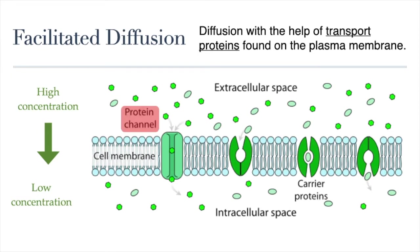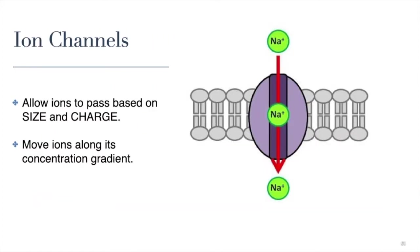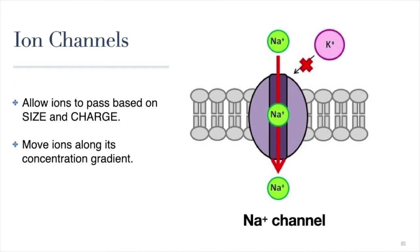Channel proteins form pores or tunnels crossing the membrane, and they allow the target molecules or ions that pass through them by diffusion to do so without interaction. Ion channels allow ions to move through the plasma membrane along the concentration gradient. They tend to be specific to the ion they allow through, based on both the size and the charge of the ion. For example, this here is a sodium channel. Sodium ions are the right size and the right charge to move through this channel. This potassium ion, on the other hand, is the right charge but it's just too big to fit through the channel. This fluoride ion is the same size as the sodium ion but cannot pass through the channel because it is the wrong charge.